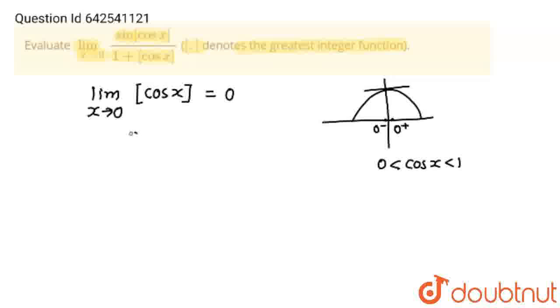So, the answer will be sine 0 upon 1 plus 0. And sin 0 is 0, and 1 plus 0 is 1, and 0 upon 1 is 0, and this is our final answer. Thank you, students.